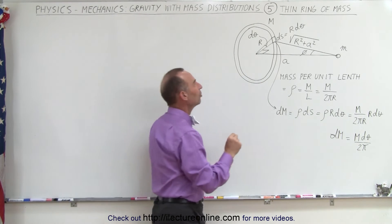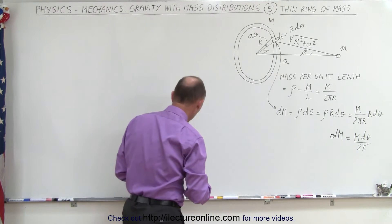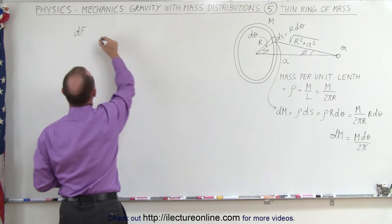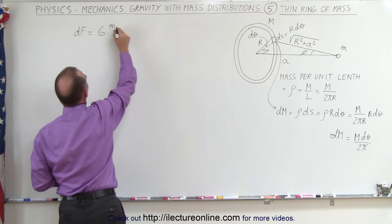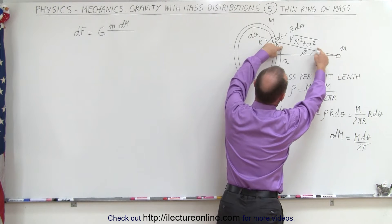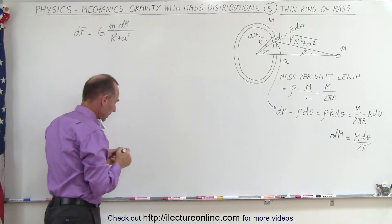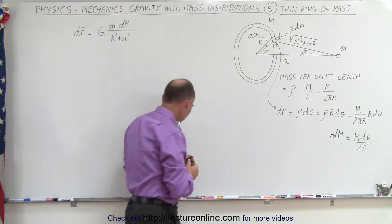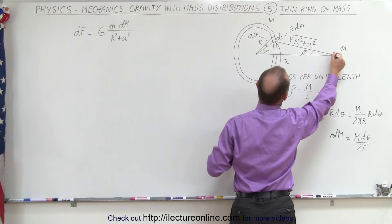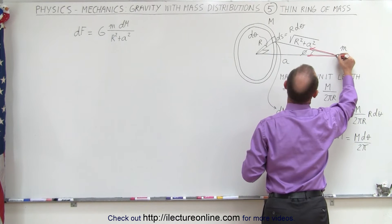Now we'll consider the contribution to the force of gravity on mass m due to this little segment, calling it a small df. A small amount of force df acting on m is going to be equal to G times m times dm divided by the distance between them squared. The distance squared is r squared plus a squared. That is the force of attraction between m and that little segment, directed along the line connecting them. Notice that this force has a component along the axis and a component perpendicular to it.